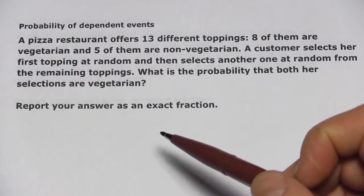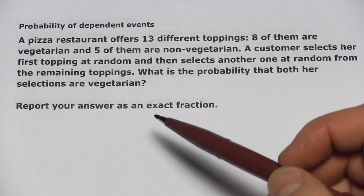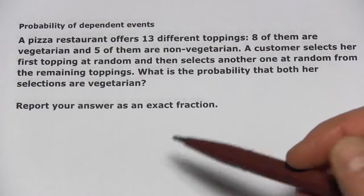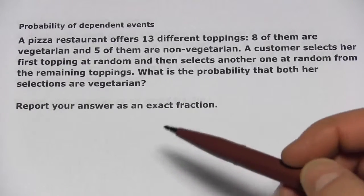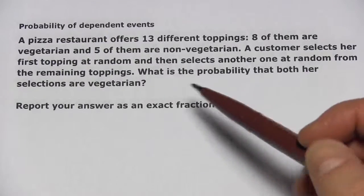Here, we're looking at the probability of dependent events. Dependent events are things where the outcome of the first event affects the probability of what comes after. Let's look at this problem.